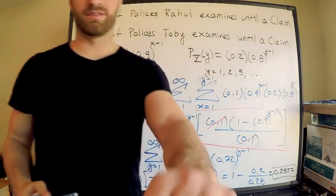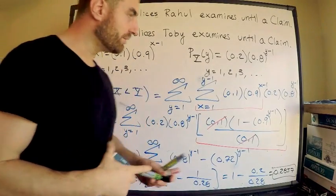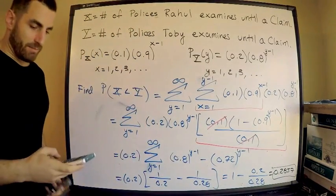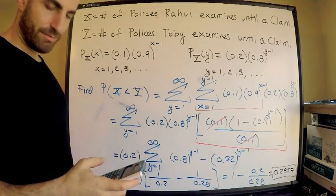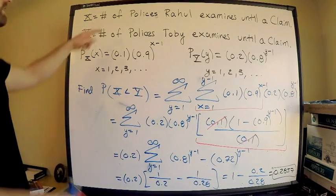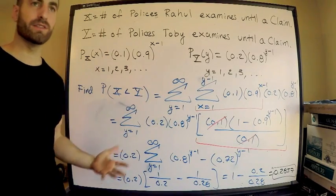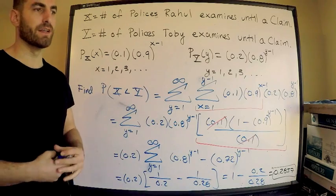And hopefully this is the right answer. So this is 0.2857. So that's the probability that actuary Raul looks at fewer policies than actuary Toby. And that makes sense because he's looking at the low risk, so you would think that low risk you'd find a claim later on.